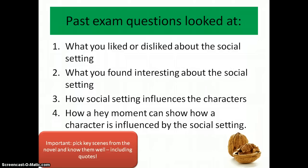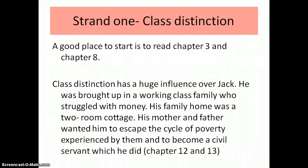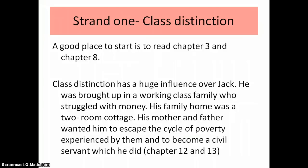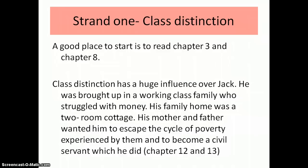The first strand is class distinction — working class and middle class. A good place to start is chapter 3 and chapter 8, but also read chapters 12 and 13. Class distinction has a huge influence over Jack. He was brought up in a working-class family that struggled with money quite a lot — his family home was only a two-room cottage. His mother and father wanted him to escape the cycle of poverty and become a civil servant, which he eventually does in chapters 12 and 13, even though he doesn't really want to.